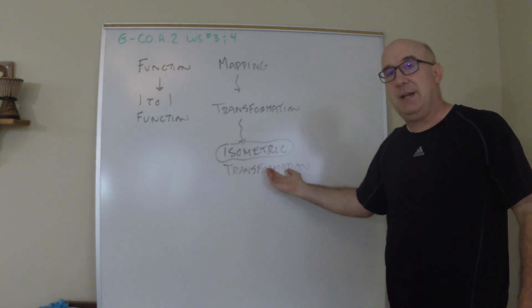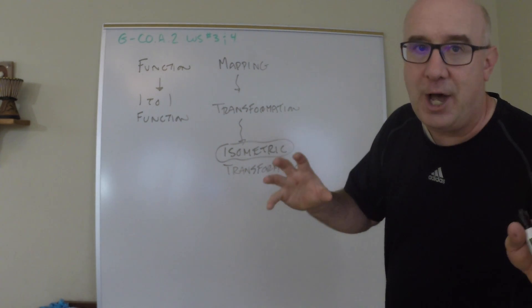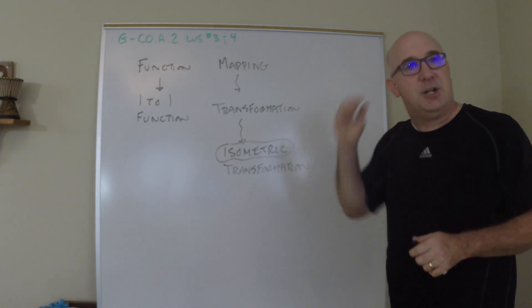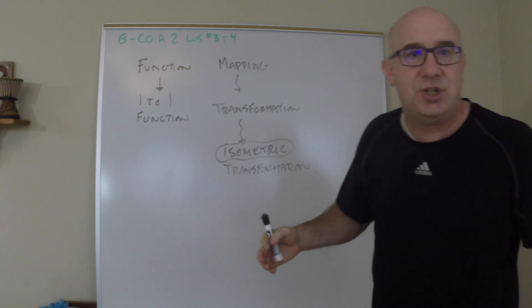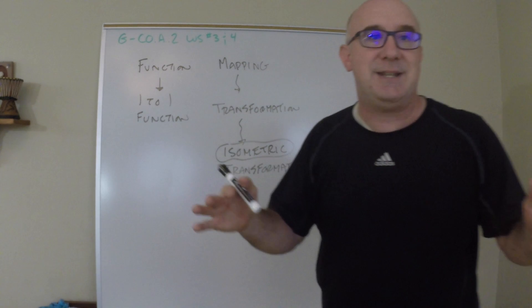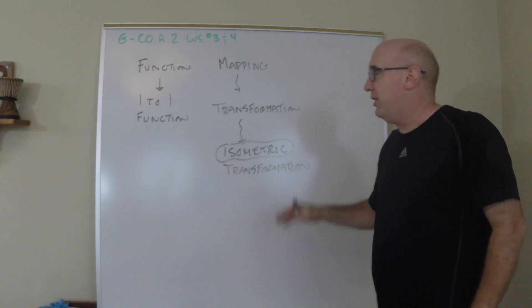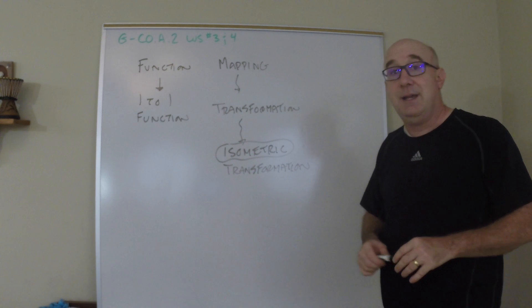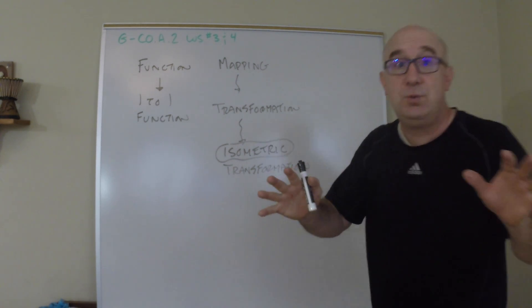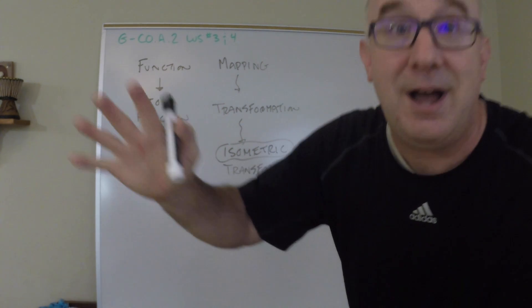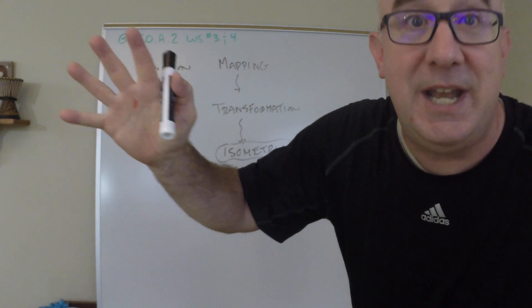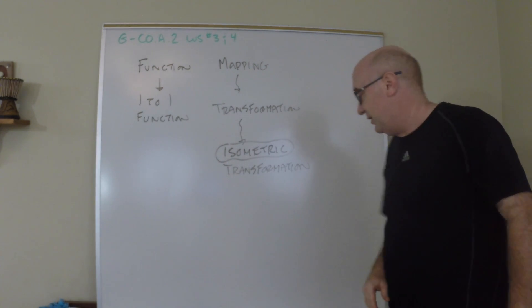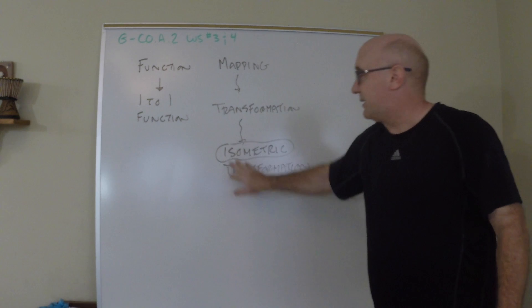So you have some that are isometric and some that are non-isometric. In the isometric family you're going to find out we got rotations and reflections and translations. In the non-isometric area we're going to have things like dilations, dilations just like this, zooming in, zooming out, and things called stretches and whatever.